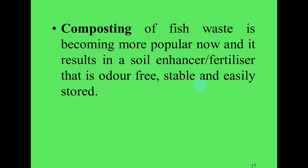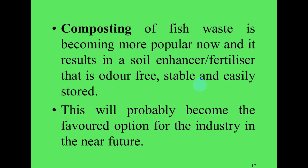The fish waste is chopped and liquefied, then formic acid is added, converting it into silage — this is an enzymatic process. The resulting liquid silage can be used as fertilizer. Composting of fish waste is becoming more popular and results in a soil enhancer or fertilizer that is odor-free, stable, and easily stored. This will probably become the favored option for the industry in the near future.